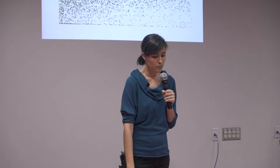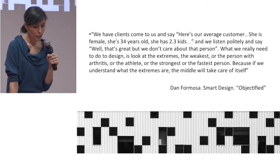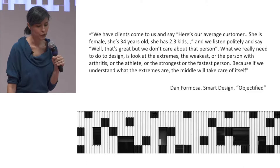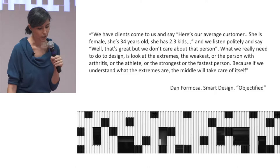I want to give you this quote by Dan Formosa from Smart Design, from the film Objectified. He says: 'We have clients who come to us and say, here's our average customer — she's female, she's 34 years old, she has 2.3 kids — and we listen politely and say, well, that's great, but we don't really care about that user. What we really need to do to design is to look at the extremes. Who is the weakest — the person with arthritis — or the athlete, the strongest, the fastest? Because if we understand what the extremes are, the middle will take care of itself.' So we spend so much time thinking about that average user, but that is the user who will have the easiest time adapting to whatever design you put out. If we think about those extremes, we're actually opening our eyes to opportunities that might not have otherwise been obvious.